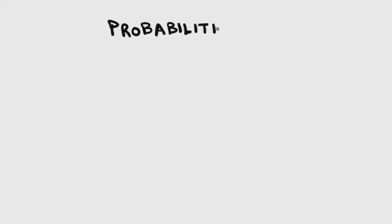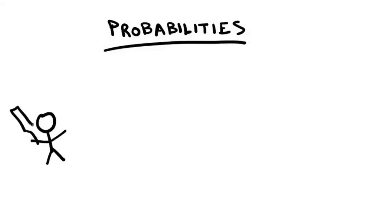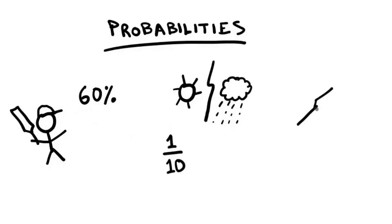We have all heard about or encountered probabilities. There is a 60% chance that India will win the third cricket match against England. There is one in a tenth chance that it will rain tomorrow. There is a 90% chance of recovering from COVID after taking the vaccine.